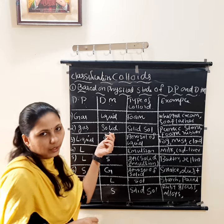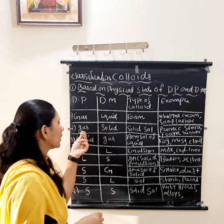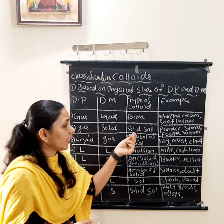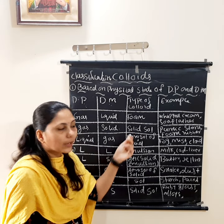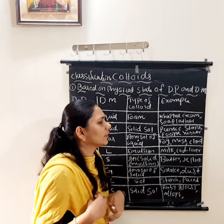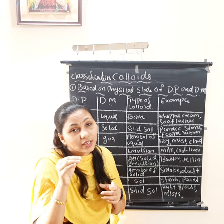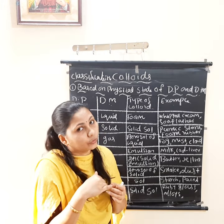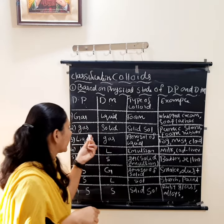The second type: dispersion phase is gas and dispersion medium is solid — gas is dissolved in solid. The name of that colloid is solid foam. Examples are pumice stone, foam rubber, etc. Pumice stone is a solid inside which air bubbles are filled. Solid foam rubber also has gas filled within it.